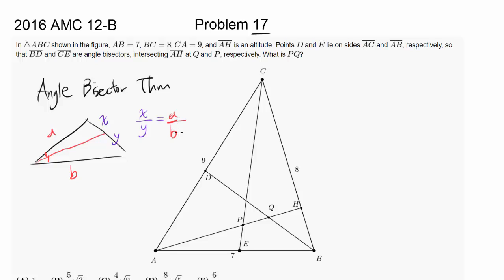Let's get right into it. In triangle ABC shown in the figure, AB equals 7, BC equals 8, and CA equals 9. AH is an altitude, so that angle is 90 degrees. Points D and E lie on sides AC and AB respectively, such that BD and CE are angle bisectors — angle bisector theorem coming soon — intersecting AH at P and Q. What is PQ?